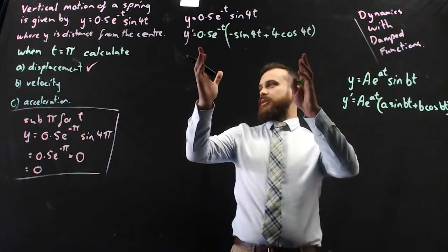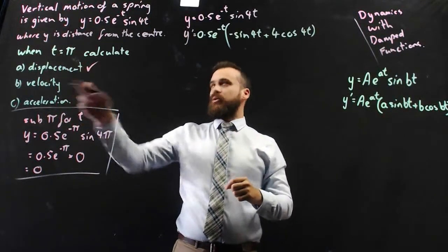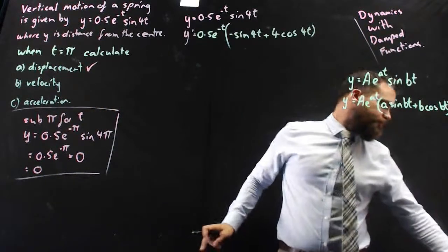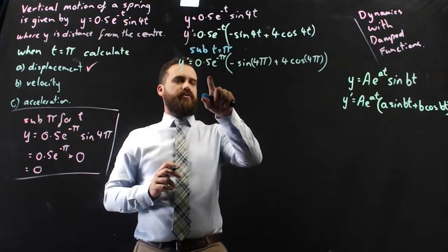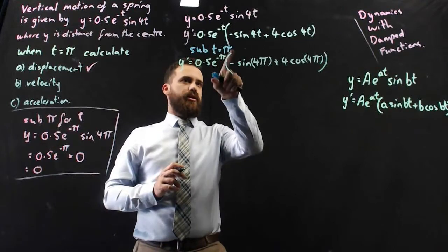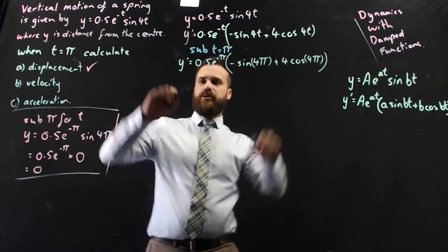Alright, so now that we've got that, simply put we can sub in time equals pi and we can find out what our velocity is. So subbing in t equals pi, we get 0.5e to the negative pi bracket minus sine 4pi plus 4 cos 4pi.